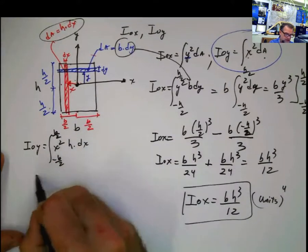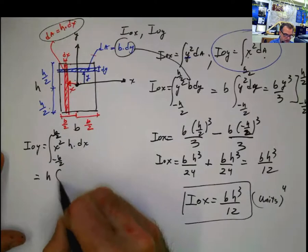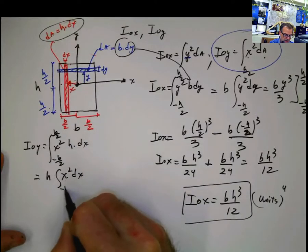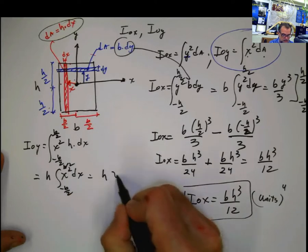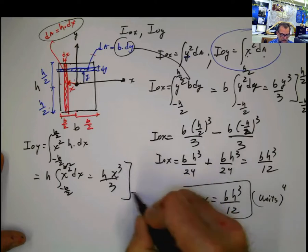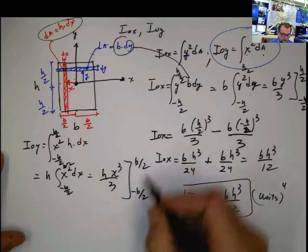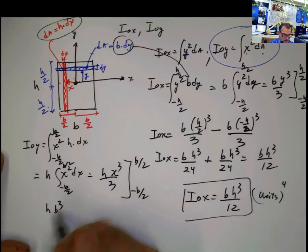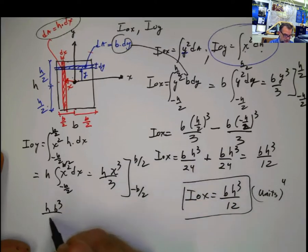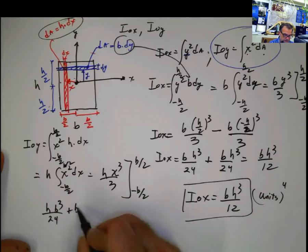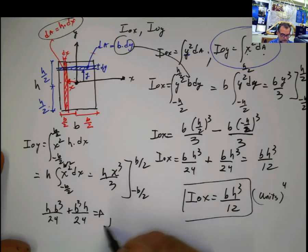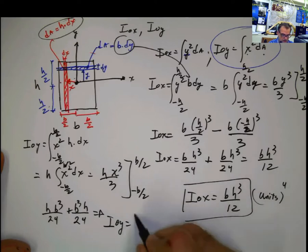Solving this, h outside, the same thing that we did before. h integral x squared dx from negative b divided by 2 to b divided by 2. This is h times x to the third divided by 3 between negative b half and b half. Plug this into here, hb cubed divided by 24, minus times minus, plus hb cubed divided by 24. That implies that the moment of inertia with respect to y is equal to hb cubed divided by 12.